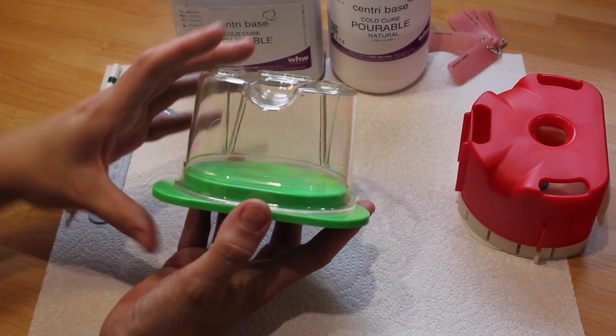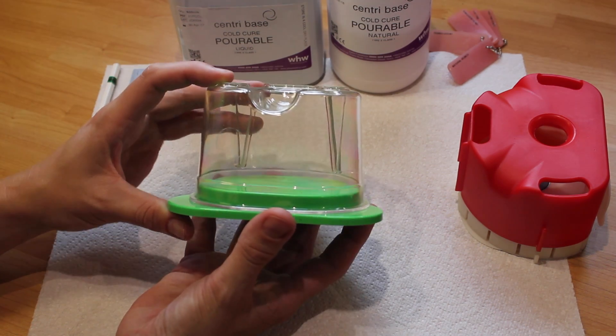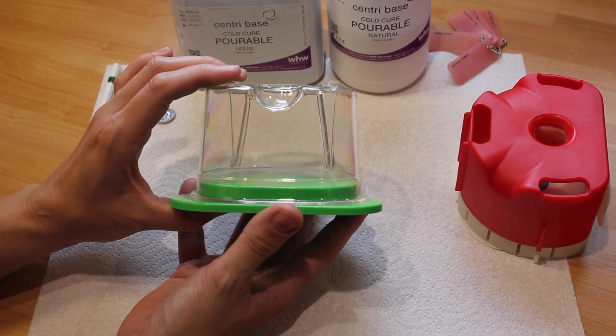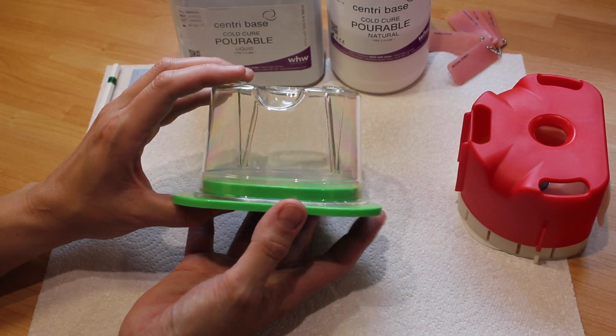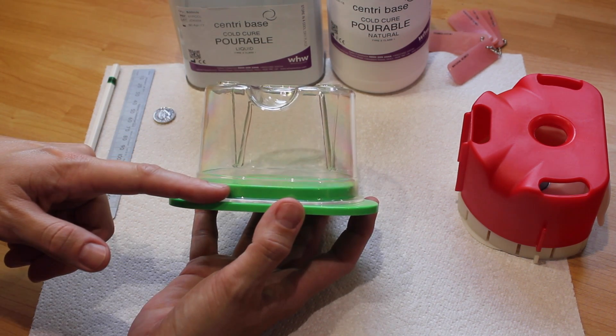So today we're going to customize a standard duplicating flask. What you'll need to consider as flasks vary in heights and shapes is where an average model will sit once it's raised by the base lip.